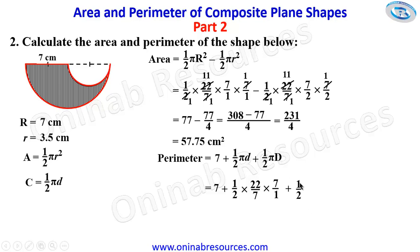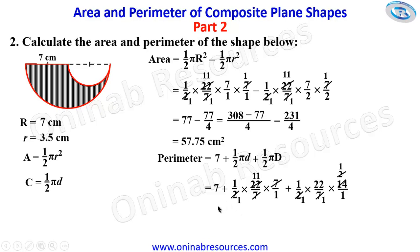Then plus half times 22 over 7 times 14 over 1. Simplifying: 7 goes with 7 gives 1, 2 goes into 22 gives 11, so we have 7 plus 11 giving the first term, and 7 goes into 14 gives 2, so we are left with 22 for the second term. This gives us 7 plus 11 plus 22, which is 33 plus 7 giving 40 centimeters as the perimeter of the shape. That's all for problem two.